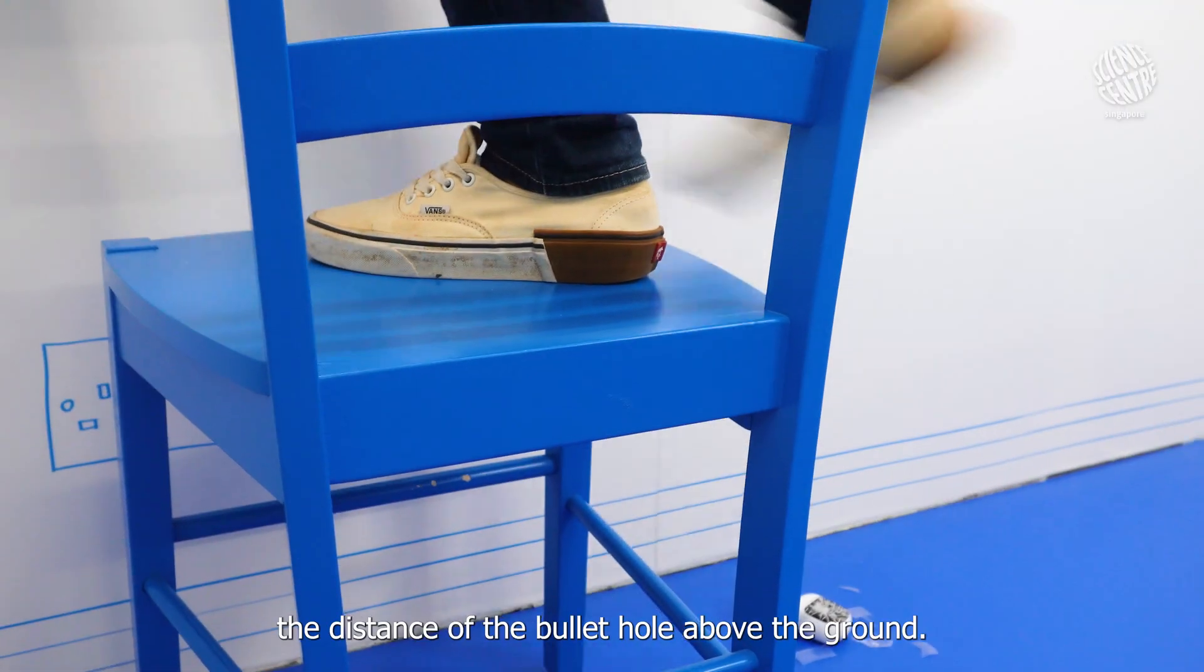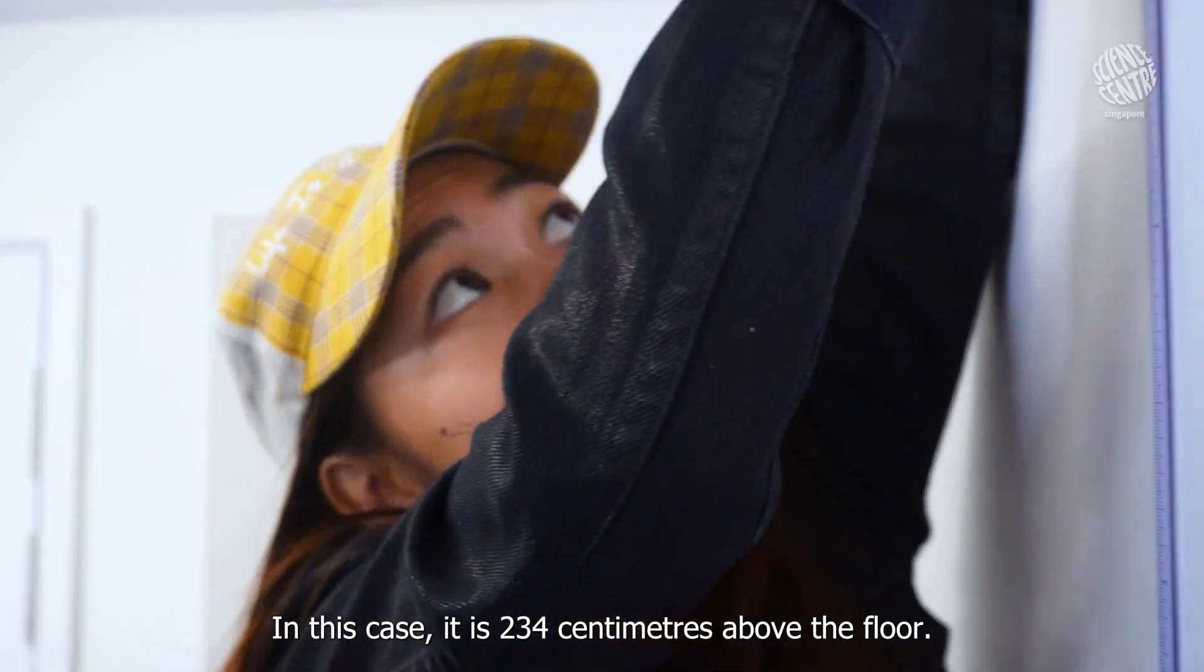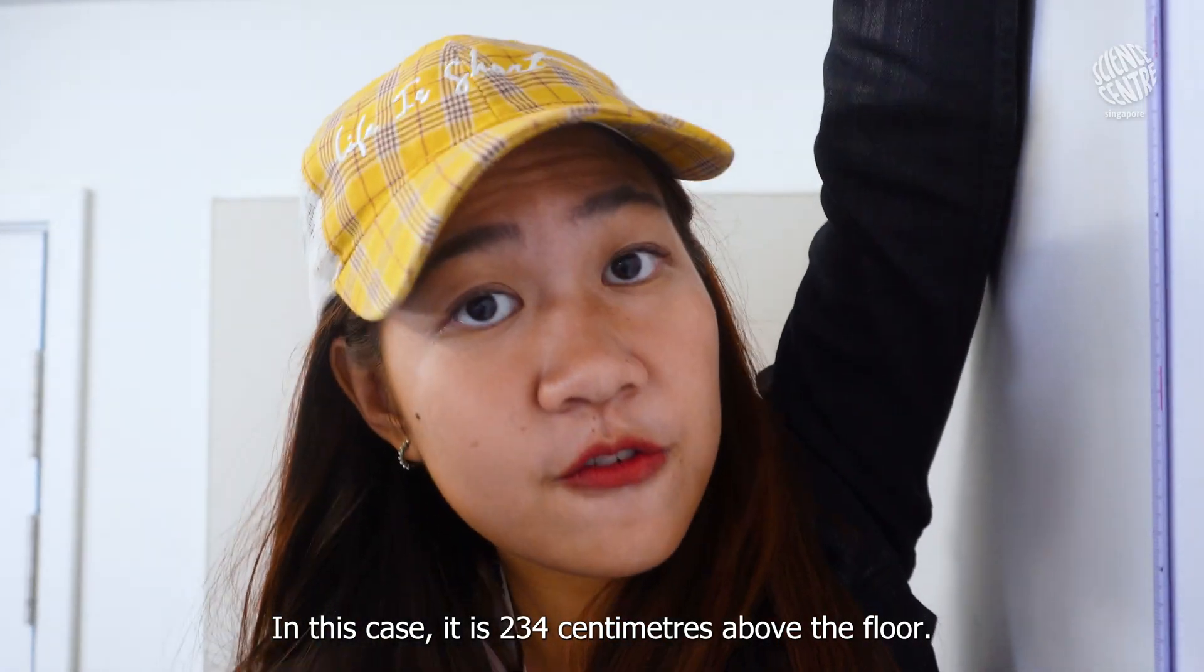We first measure the distance of the bullet hole above the ground. In this case, it is 234 cm above the floor.